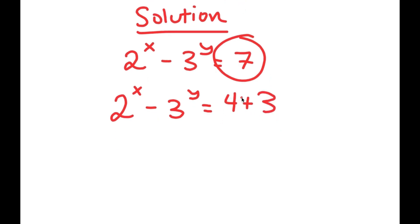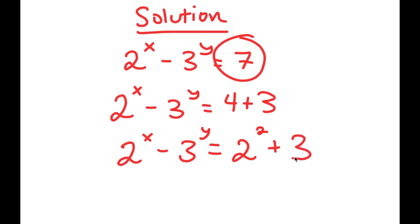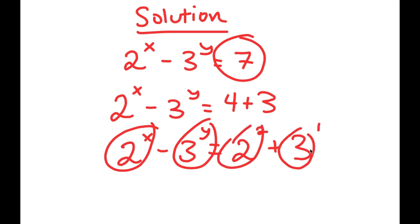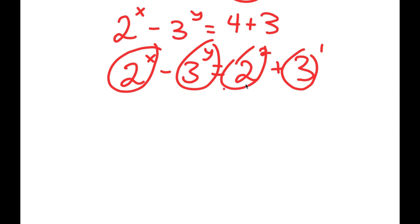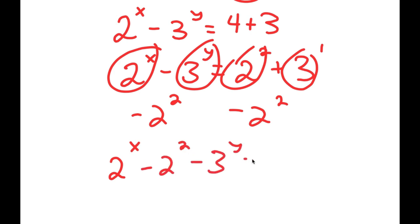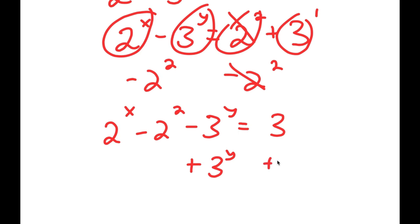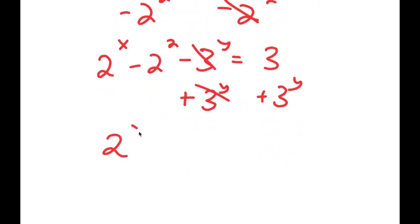The reason I did this is because 4 is the same thing as 2 squared, so now I get 2 squared plus 3. Notice I have 2 to the power of x minus 3 to the power of y equal to 2 squared plus 3 to the power of 1. I'm going to group the powers of 2 together and the powers of 3 together. Subtracting 2 squared from both sides gives 2 to the power of x minus 2 squared minus 3 to the power of y equals 3. Then adding 3 to the power of y on both sides gives 2 to the power of x minus 2 squared equals 3 to the power of y plus 3.